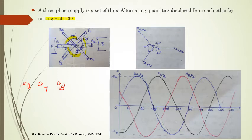You can see all are alternating voltages which are of the same magnitude and frequency, as they are rotated at uniform speed.